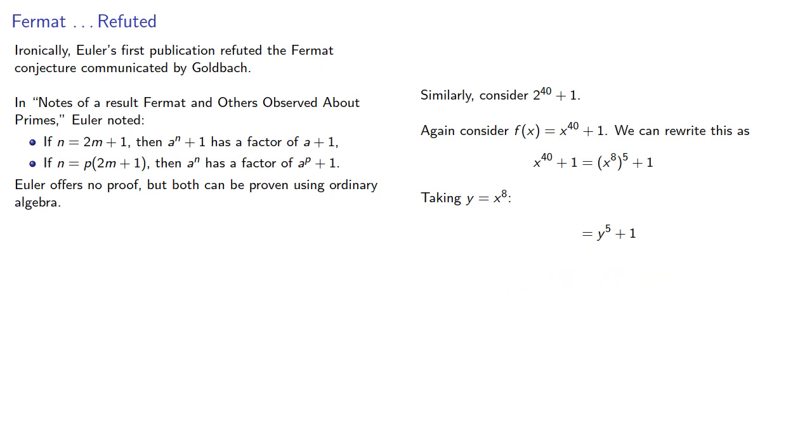Which has a factor of y plus 1, so it's y plus 1 times something. And restoring x to the 8th equals y gives us the factorization. And so consequently, 2 to the 40th plus 1 has a factor of 2 to the 8th plus 1.